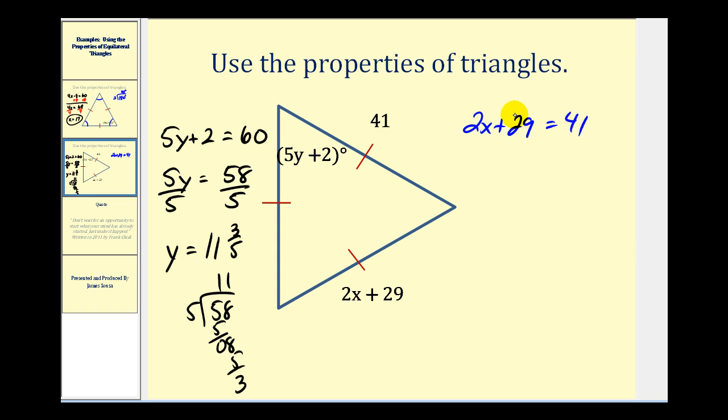Now we have our basic two-step equation. Again we'll subtract 29 on both sides. So we have 2x on the left. 41 minus 29, that's going to give us 12. Divide both sides by 2. So x equals 6.